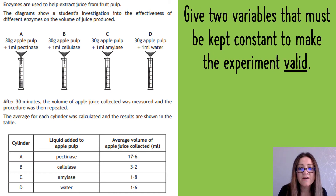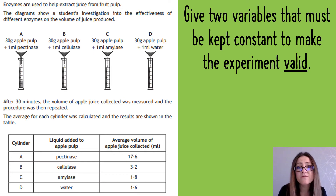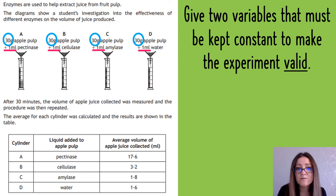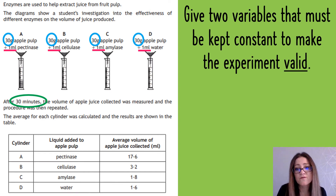A really typical question asks you to give two variables that have to be kept constant to make the experiment valid. V for valid should trigger V for variable - that's what you need to talk about. Be careful when you pick: you can't use anything already stated in the question. They've told you they used 30 grams of apple pulp, a set volume of enzyme, and a time of 30 minutes - so you can't pick any of those.